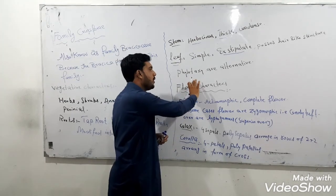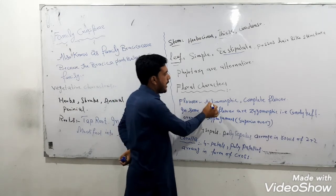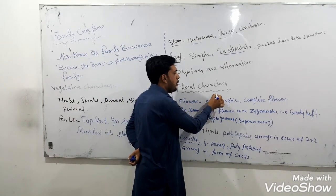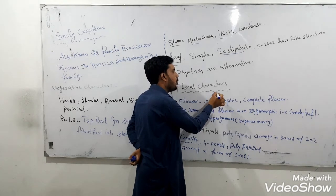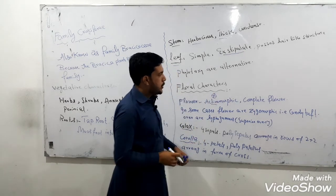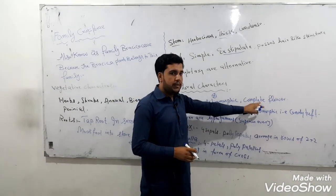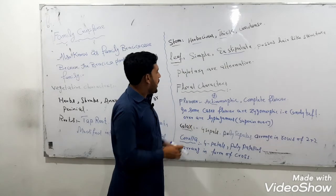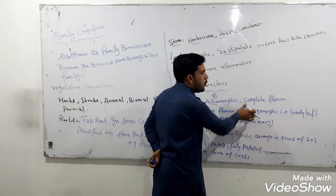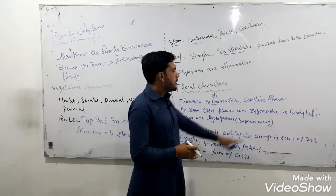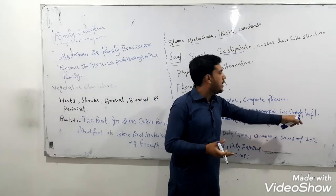Coming to the floral characters of this family — first we discuss about the flower. The flowers are actinomorphic, meaning the flower can be cut on more than one plane. The flowers are complete flowers in this family. In some cases, flowers are zygomorphic, which can be cut only in one plane. For example, candy tuft — in candy tuft, the flower can be cut only in one plane.